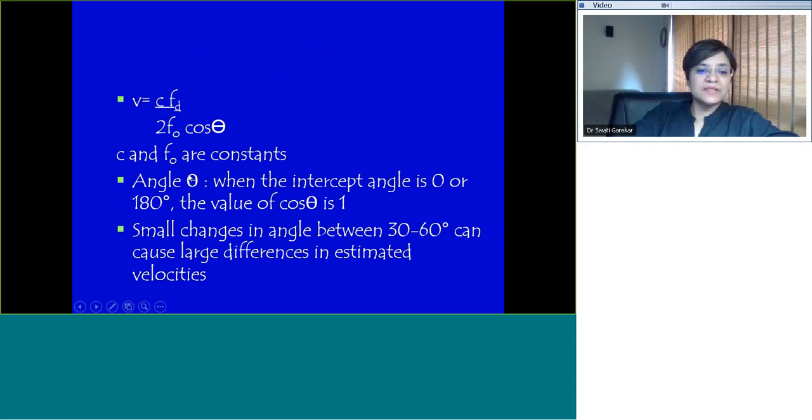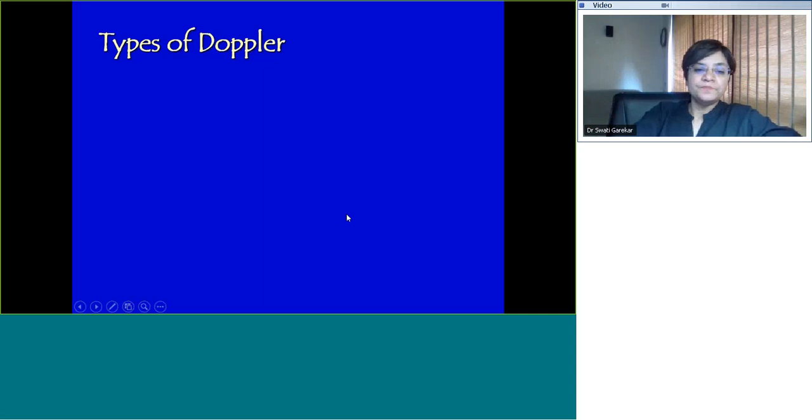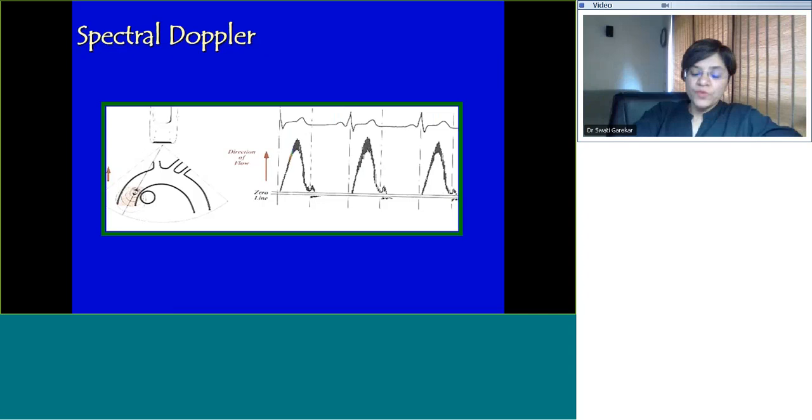If we rearrange things and put V on the left side, C and FO are constant. When the intercept angle is 0 or 180 degrees, the value of cos theta is 1, which means when your Doppler cursor is totally aligned with the direction of blood flow, then you'll have the least error. Small changes in angle can cause large differences in estimated velocities. Look at this cartoon. You are interrogating the aortic valve from the suprasternal notch. Your intercept angle is 10 degrees, you've got a velocity of 1.97 meters per second. But suppose your intercept angle is awkward at 60 degrees, then you will not pick up the maximum velocity and you'll get false readings.